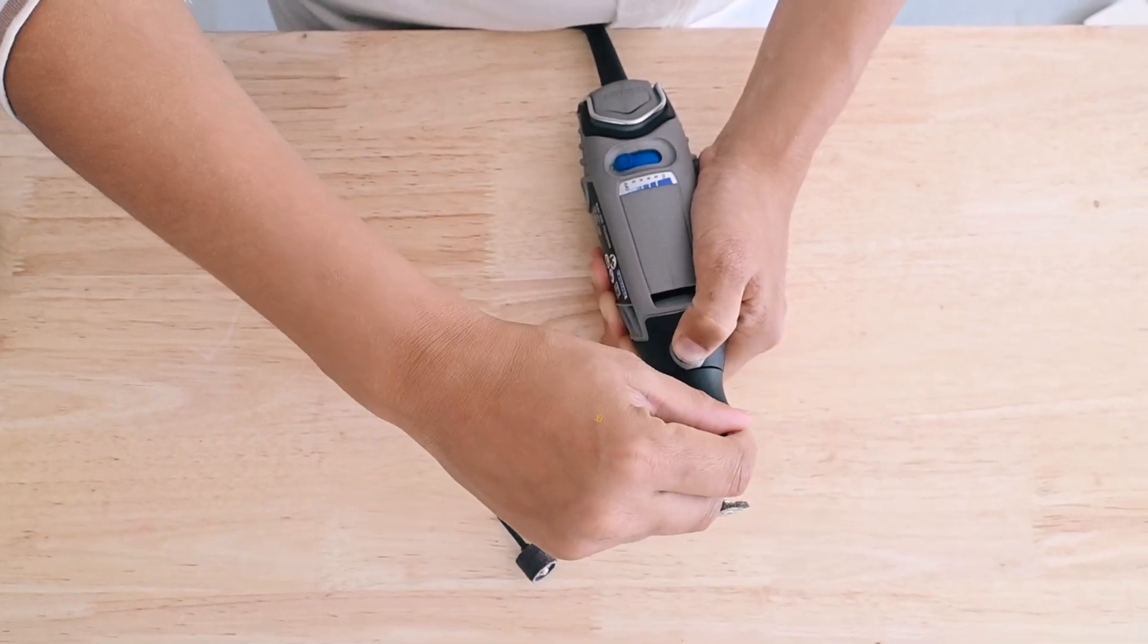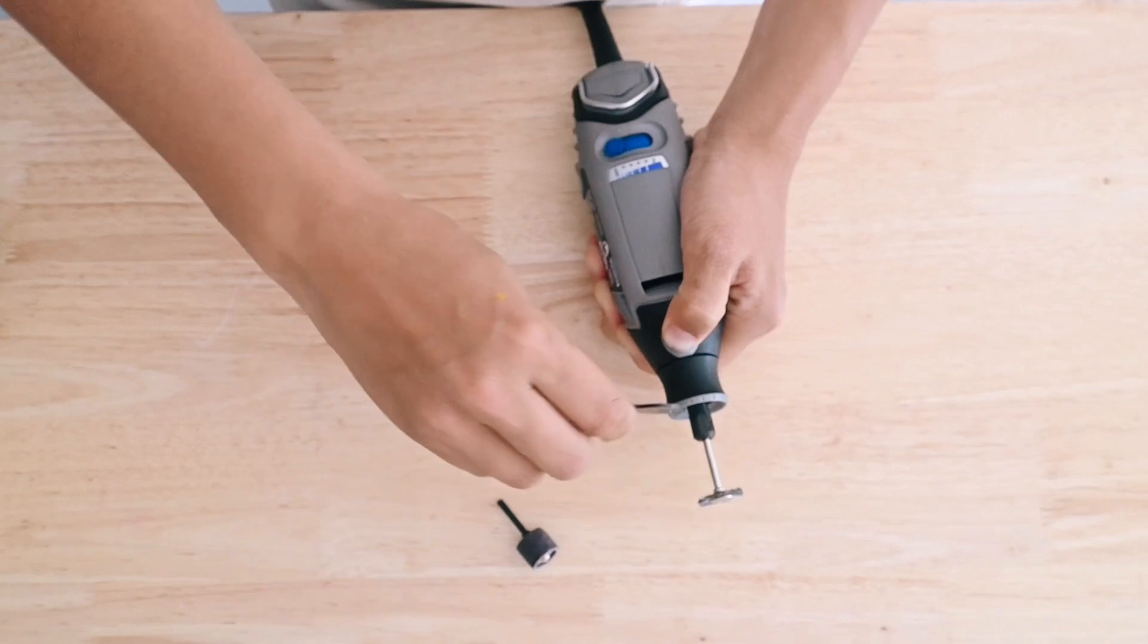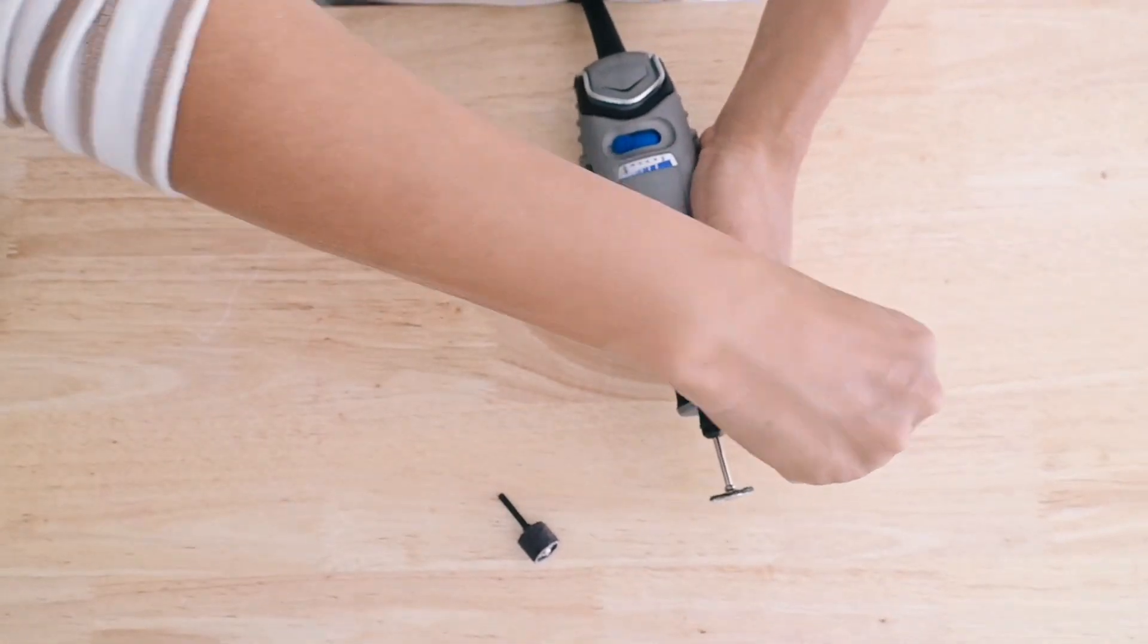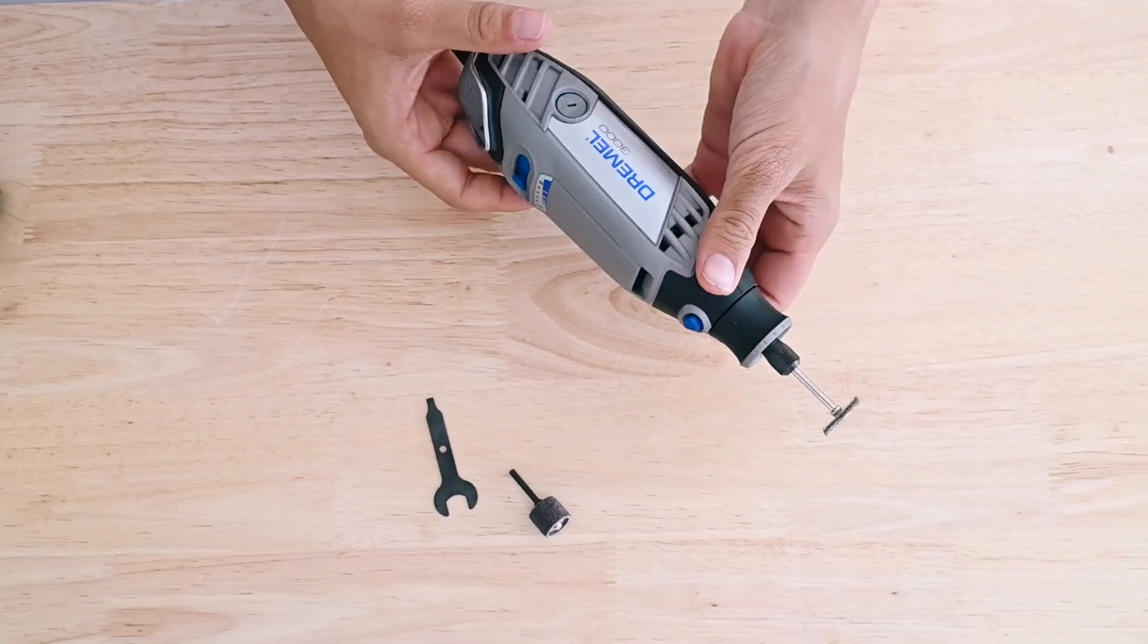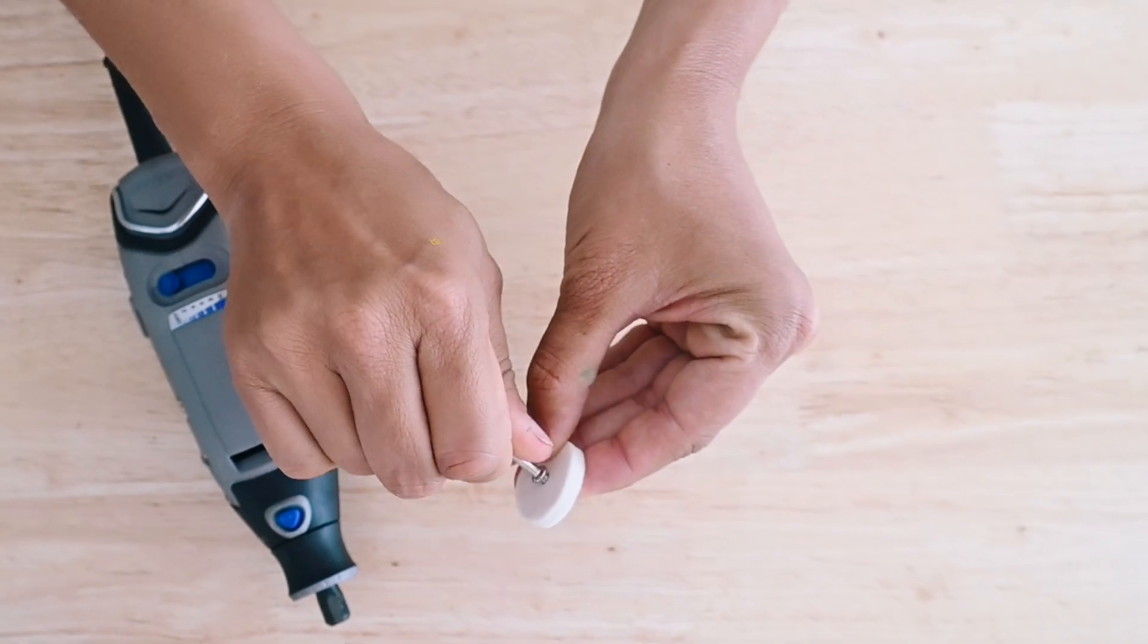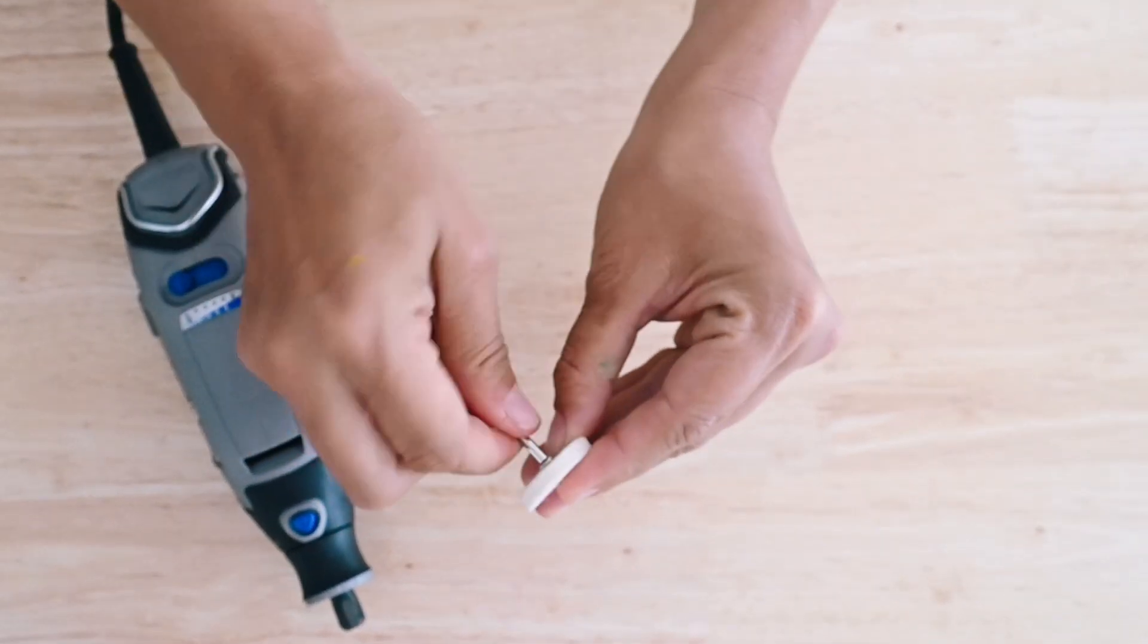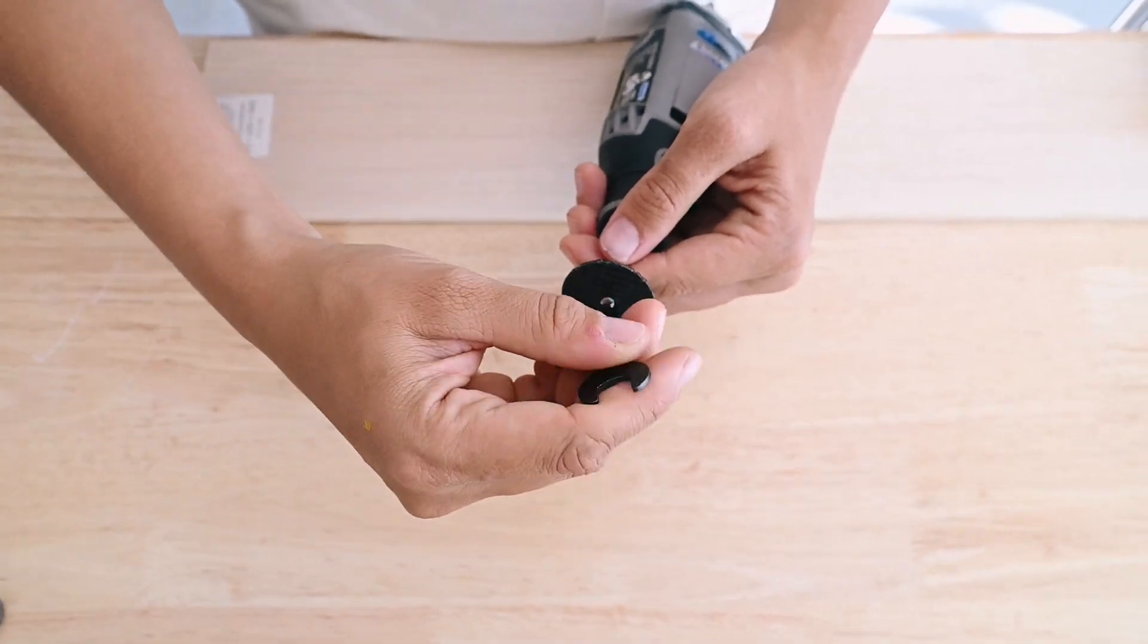At the base of the tool is a lock button which you hold down to hold that multi-chuck in place, and then you can use your spanner to open and close the multi-chuck. Some accessories, like the sanding and polishing discs, don't come with shafts, so you can add a mandrel and slide that into the multi-chuck.